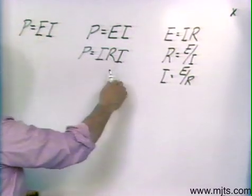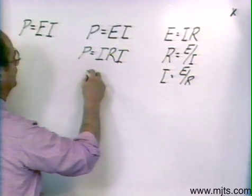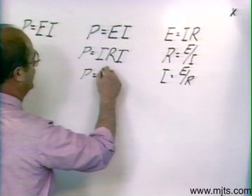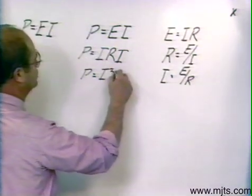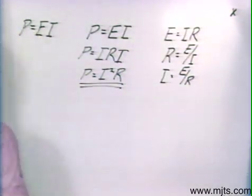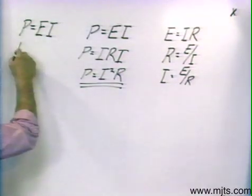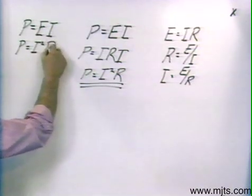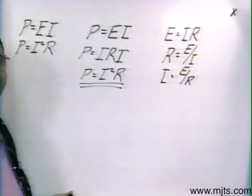I'll have P then is equal to I times R times I. We can combine terms just as we did in our algebra. Then we know that P then is equal to I times I, which is I squared times R. So we have a new formula for power: P then is equal to I squared R.